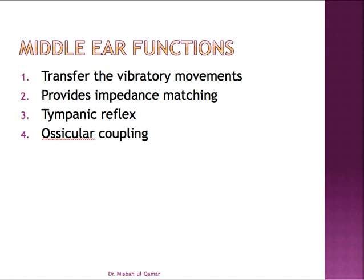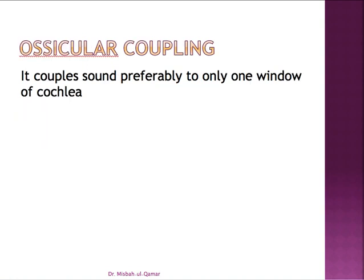The middle ear also provides a phase differential effect called ossicular coupling. The sound waves which strike the tympanic membrane do not reach the oval and the round windows simultaneously — there is always a preferential pathway to the oval window because of the ossicular chain. This phenomenon couples the sound preferably to only one window of the cochlea, producing a differential pressure between the two windows, which is called ossicular coupling.